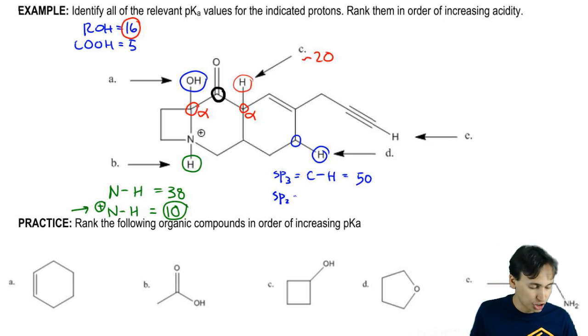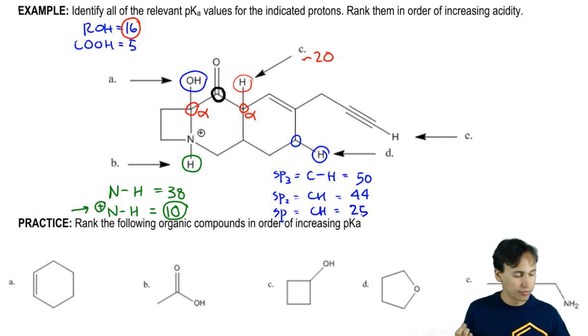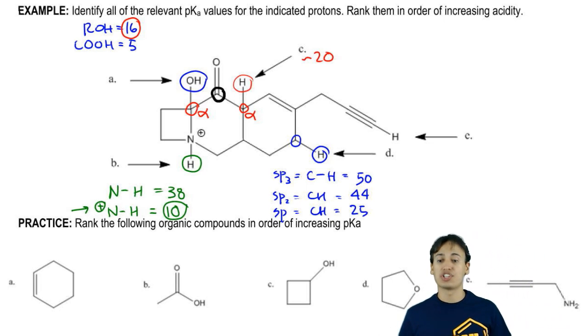Recall that SP2 CH was equal to what? You guys remember 44. You can just look above. We wrote it down. And SP CH was equal to much better, it was a much stronger acid, much stronger acid of 25. Which of these is it? How do you tell the hybridization of that carbon? Guys, you look at the groups. Remember we've done this before.